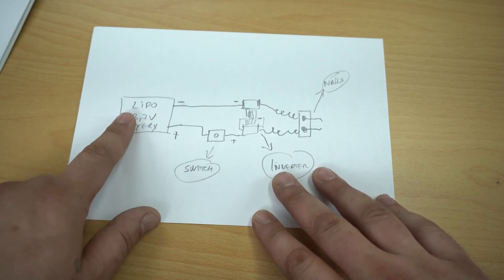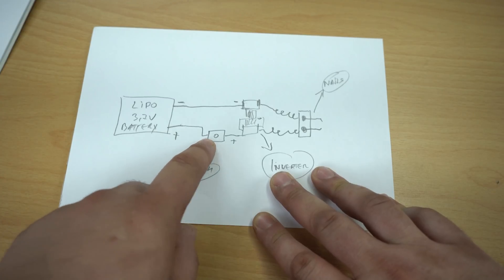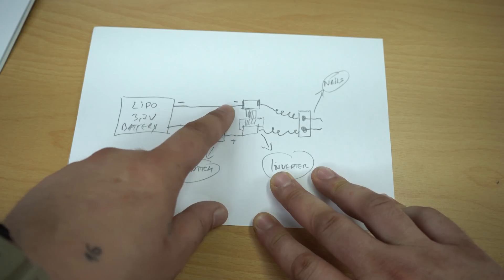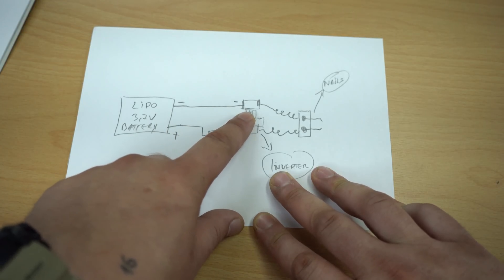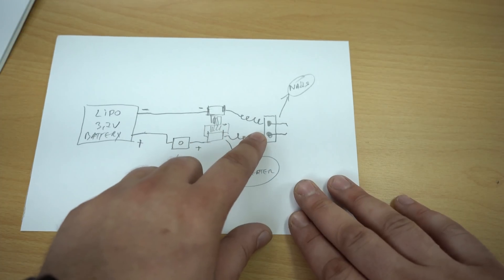From the LiPo battery, the positive wire is connected to the push switch and from here to the igniter. The negative wire is directly connected to the igniter. The two wires that came out from the igniter are soldered on two metal nails.